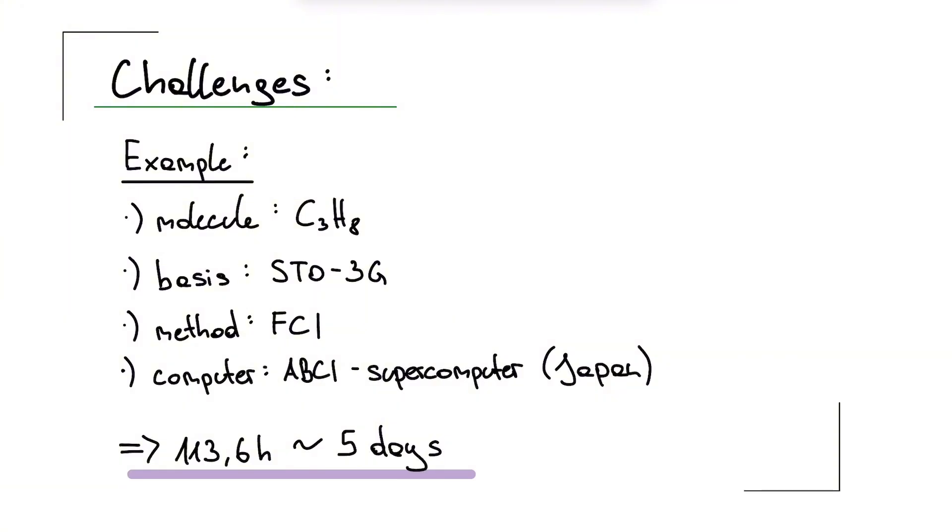The Hamiltonian matrix in this case would likely be on the order of about 10 to the power of 12 by 10 to the power of 12. I can't say that with 100% certainty, but that should be roughly the scale we are talking about here. For larger molecules, especially in biology where we deal with hundreds or thousands of atoms, these matrices explode to sizes like 10 to the power of 100 by 10 to the power of 100, or even larger. At that point, the problem becomes flat out impossible for classical computers.